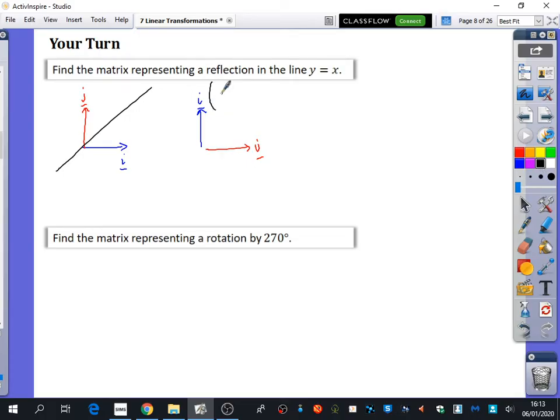So i has become 0, 1, j has become 1, 0. So the matrix representing the transformation is 0, 1. It's like an identity, but everything's switched around.